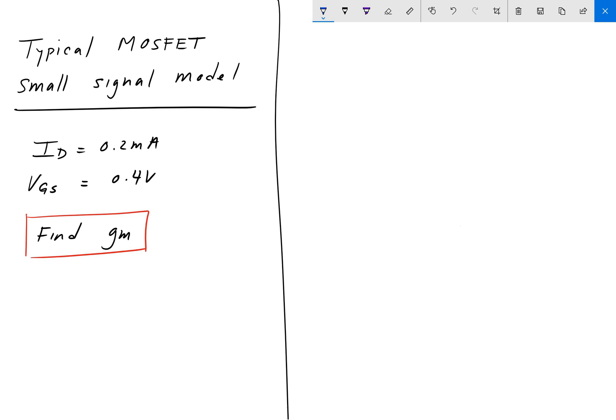So going back to our problem here, we have that ID is equal to GM times VGS. Just rearranging that and solving for GM, it's ID divided by VGS. Plug in the numbers: 0.2 milliamps for ID and 0.4 volts for VGS.